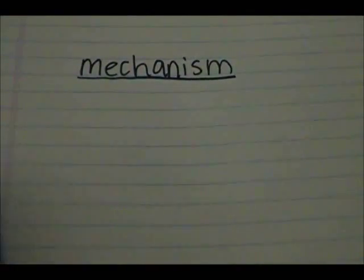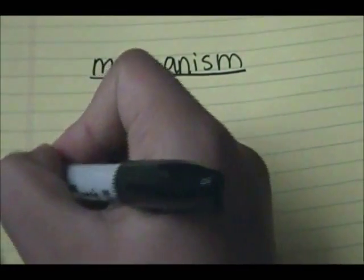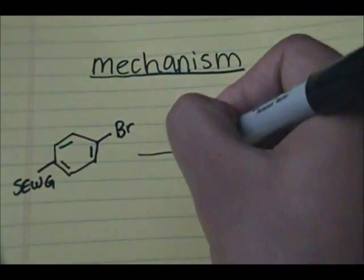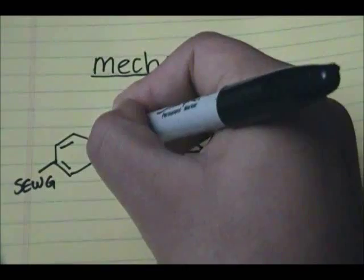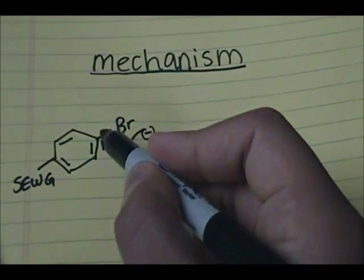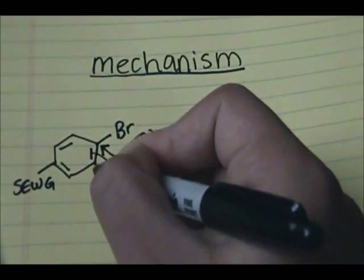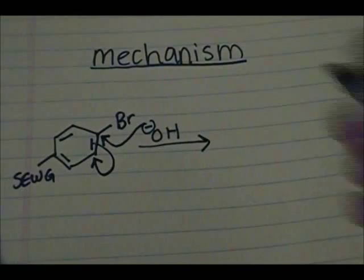Let's discuss the mechanism. It's pretty straightforward. We have this aromatic ring, we have our bromine, and we have our strong electron withdrawing group in the para position relative to the bromine. We want to substitute that bromine for an OH group. What happens is that the OH forms a bond with the carbon the bromine is attached to, and a pair of electrons directly next to that carbon comes off and joins that carbon.